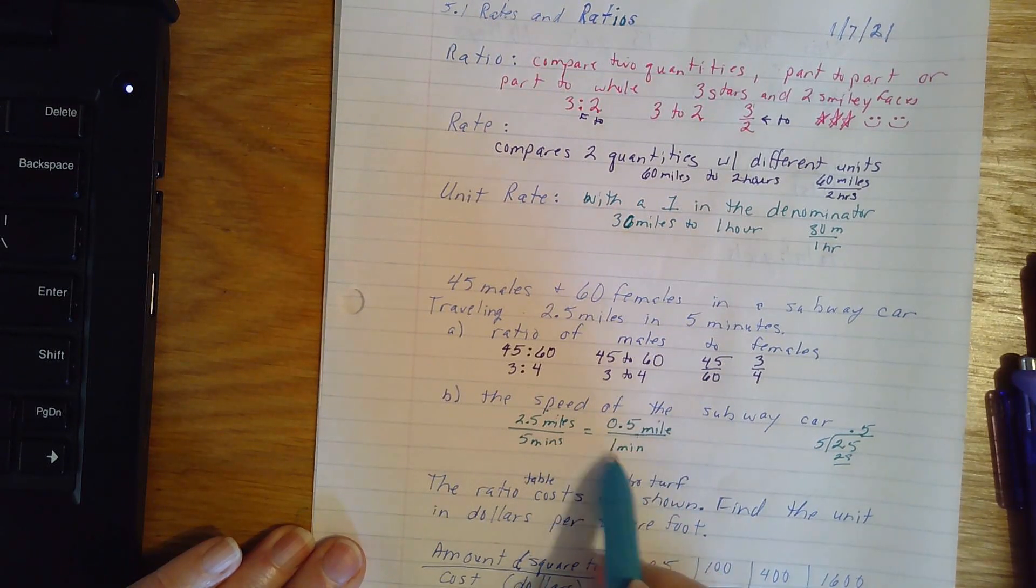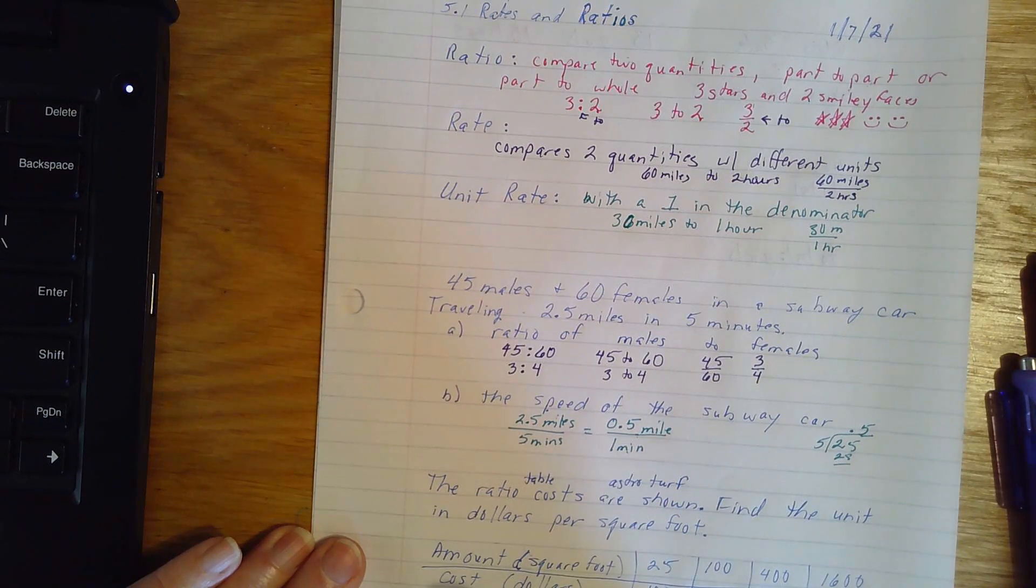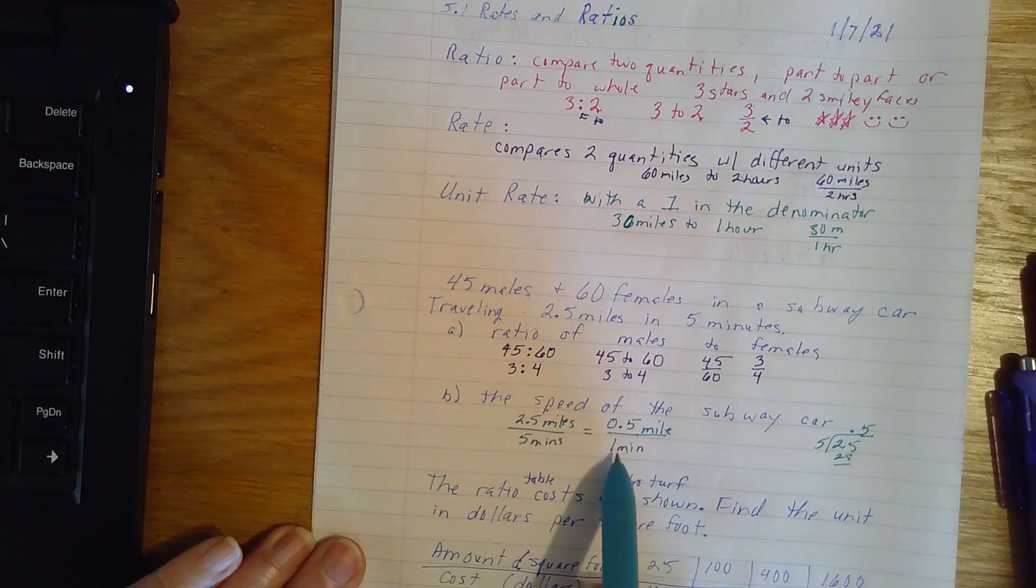So that would be 0.5 or 5 tenths of a mile in one minute. It is perfectly legal to write it this way. This is simply called a compound fraction. It's got a decimal part and it's in the fraction.